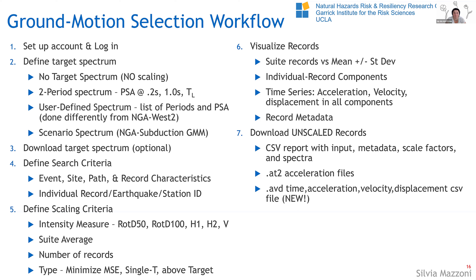The AVD file is a CSV file that maintains the header and gives you time, acceleration, velocity, and displacement all in columns — comma separated. So you can upload it into Excel directly and visualize the time series without having to write something that converts rows into columns. This was highly demanded and I highly recommend it. Always make sure you review the report and the records, and go back to the flat file to understand and visualize where these records are from.